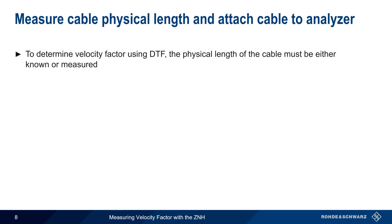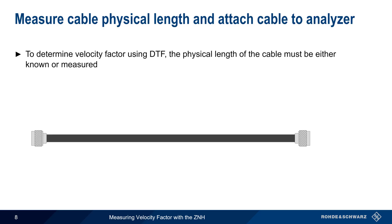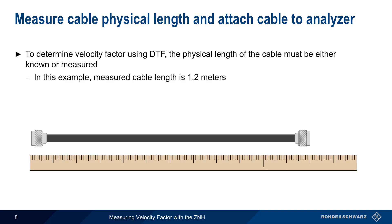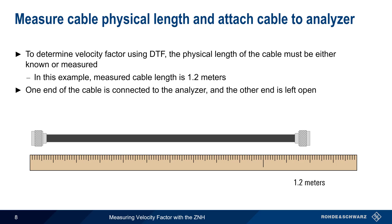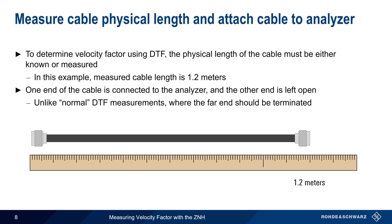In order to determine a cable's velocity factor with distance-to-fault, you must either know or measure the physical length of the cable. In this example, we'll be using a cable with a measured length of 1.2 meters. One end of this cable will be connected to the ZNH, and the other end will be left open or un-terminated. Note that this is unlike normal DTF measurements, in which we terminate the far end of the cable under test.